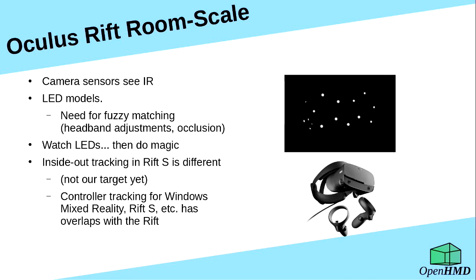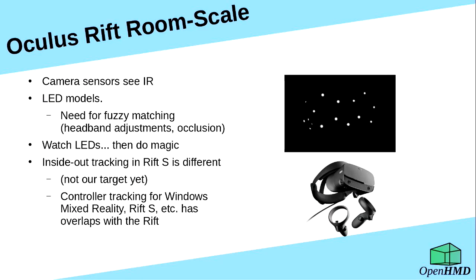In the Rift system, the headset is made out of infrared-transparent black plastic, and dotted around it is a constellation of LEDs that the camera can see but you can't. The system works: you watch the thing with the camera, you see the LEDs, you do some matching and extract the position and pose of the headset and controllers from those observations, then you feed that into a tracking loop and correct the position.